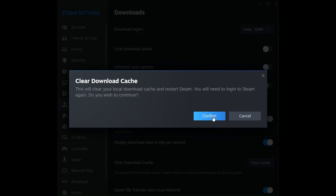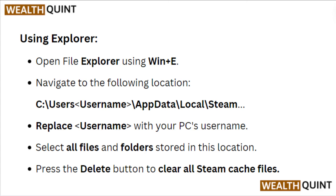Using File Explorer: Open File Explorer using Windows+E. Navigate to the following location, replacing 'username' with your PC username. Select all files and folders stored in this location and press the Delete button to clear all Steam cache files.